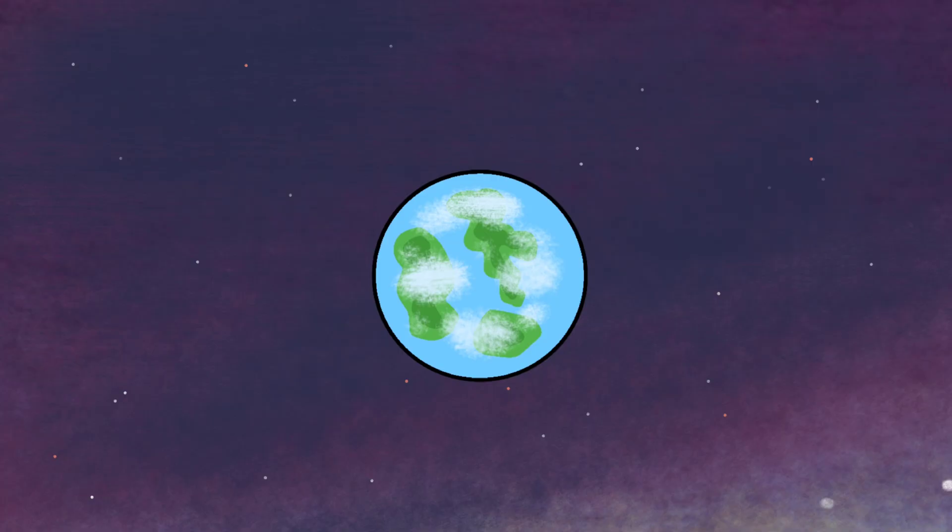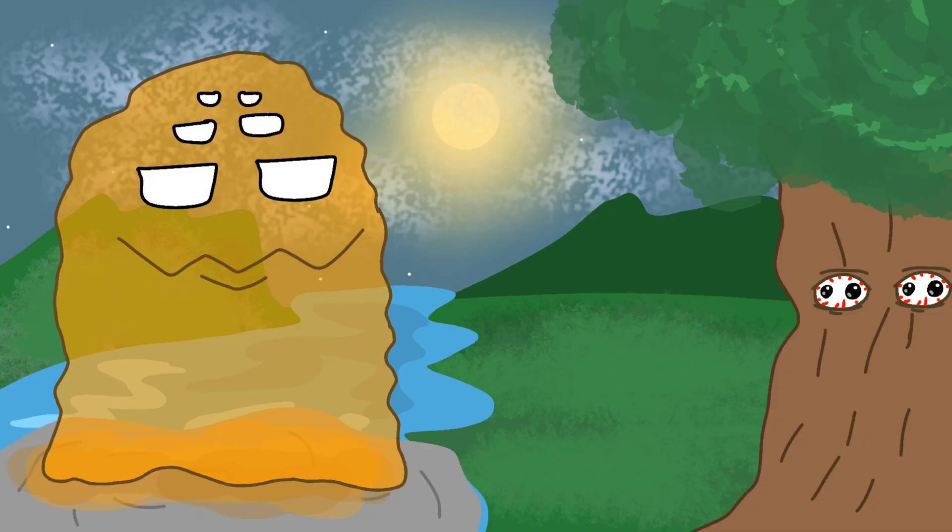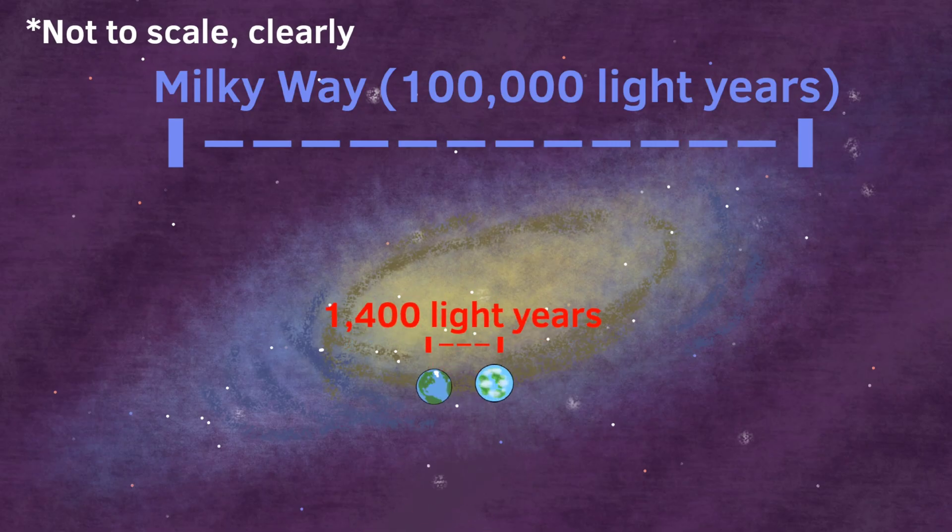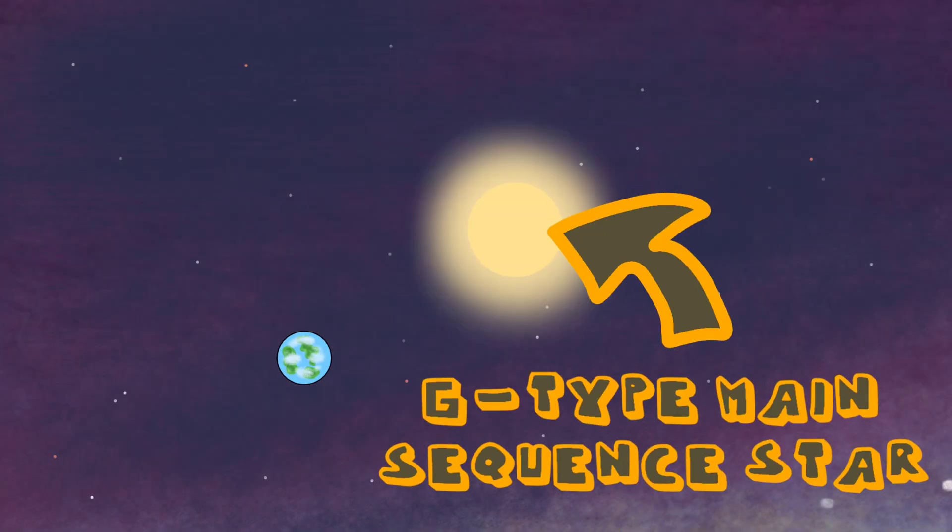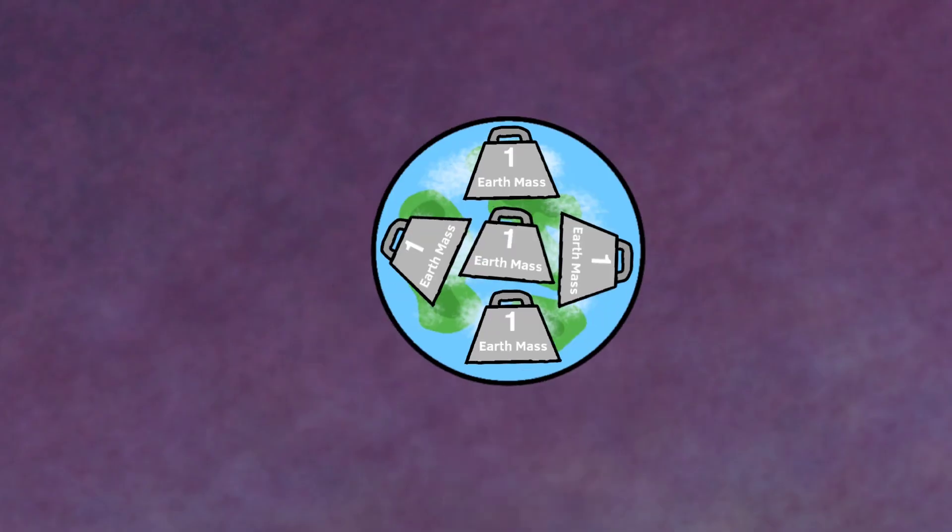Anyway, 452b is fairly similar to Earth and is currently believed to lie within the habitable zone of its host star, meaning it may have the potential to harbor life. Located 1,400 light years away from us, 452b orbits a G-type main sequence star, which is the same as our sun, and also has five times the mass of Earth.